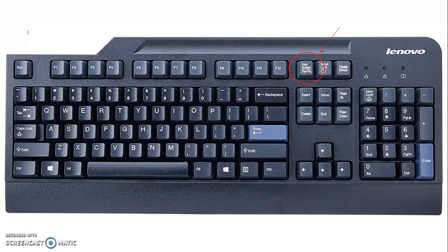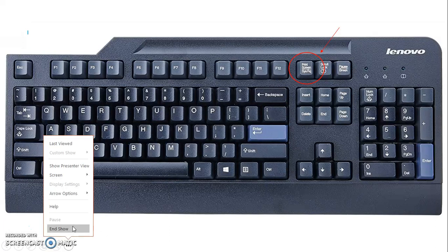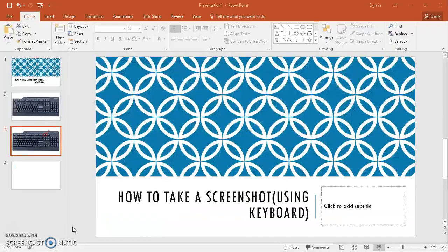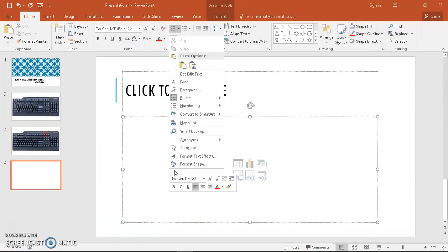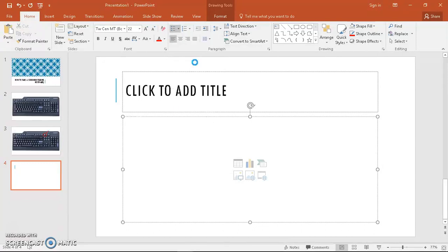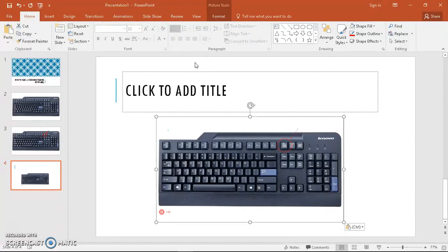So I just pressed the Print Screen button, and over here on the next slide I'm gonna press Ctrl+V, or I could just paste, and you'll see that the screen that was captured when I pressed Print Screen is what pops up.